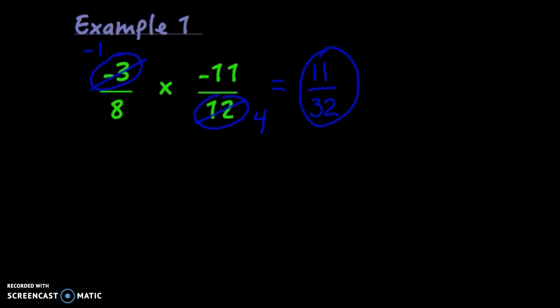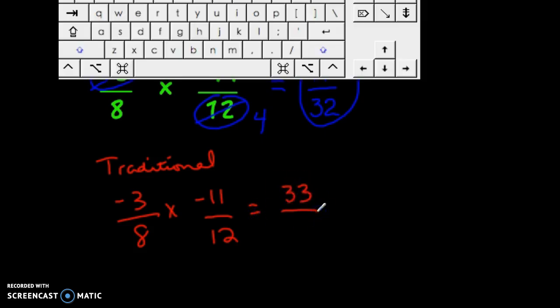If you don't like the cross-canceling method, I will show you here the traditional method. And what I would do in this case, if I wanted to go traditional, was just multiply straight across originally. So I would say negative 3 times negative 11 is 33. 8 times 12 is 96.